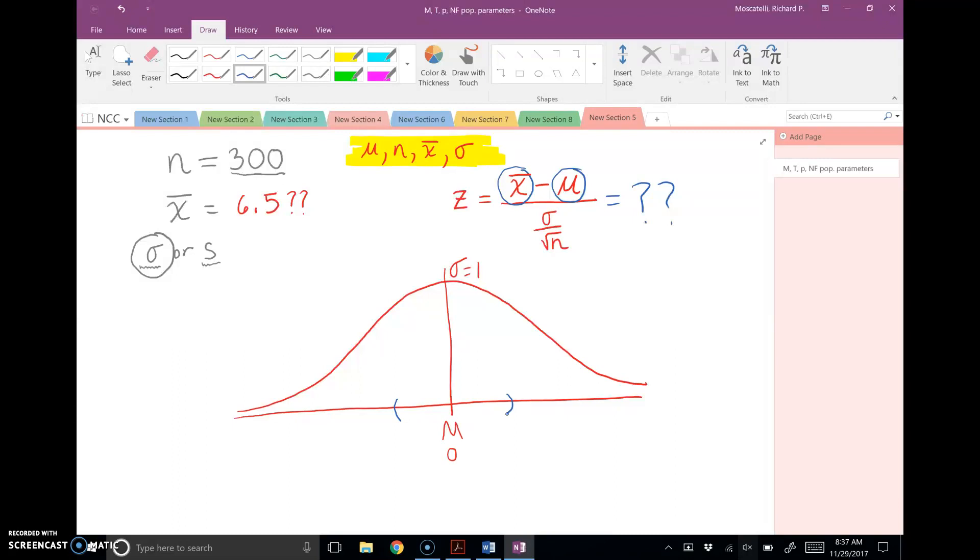The only problem is we've got these other z-scores. Z-scores that, as you know, cut areas under the normal distribution.